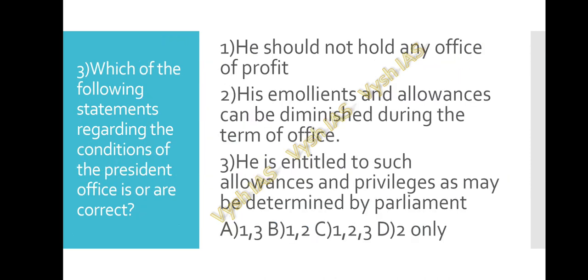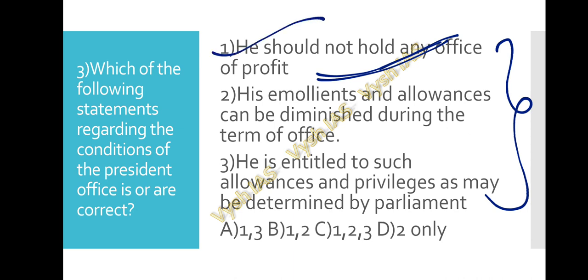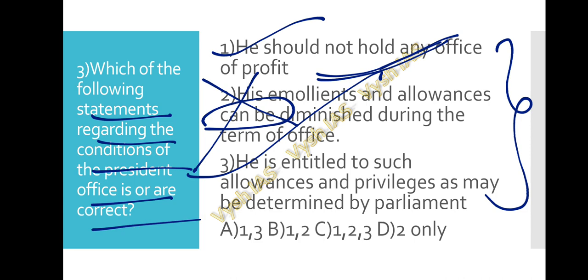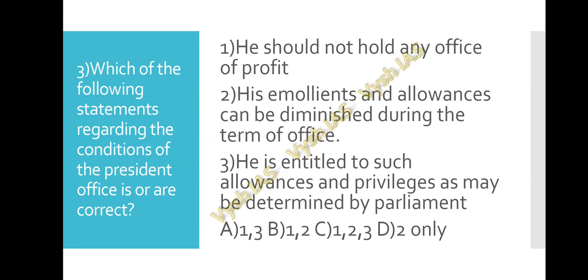Question number three: Which of the following statements regarding the conditions of the President's office is or are correct? Statement 1: He should not hold any office of profit — this is true. Statement 2: His emoluments and allowances can be diminished during the term of office — this is false, as they cannot be diminished. Statement 3: He is entitled to such allowances and privileges as may be determined by Parliament — this is true. Statements 1 and 3 are correct, so option A is the answer.